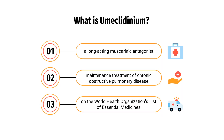Umeclidinium bromide, sold under the brand name Incruse Ellipta, is a long-acting muscarinic antagonist approved for the maintenance treatment of chronic obstructive pulmonary disease. It is on the World Health Organization's list of essential medicines. In 2020, it was the 245th most commonly prescribed medication in the United States, with more than 1 million prescriptions.